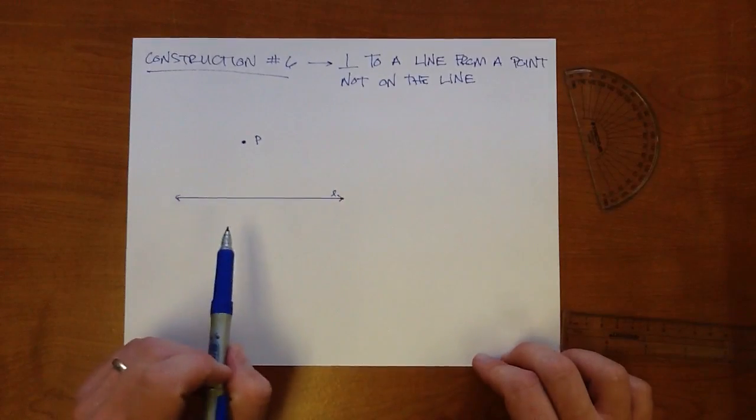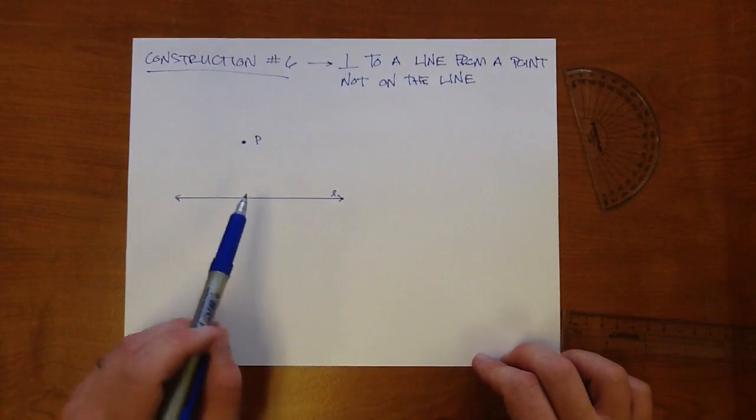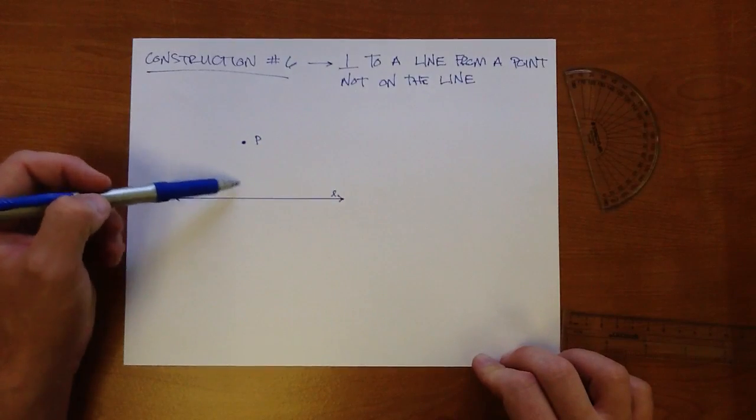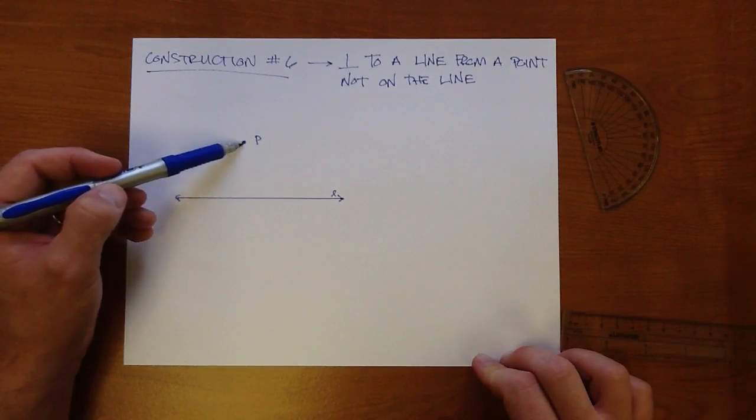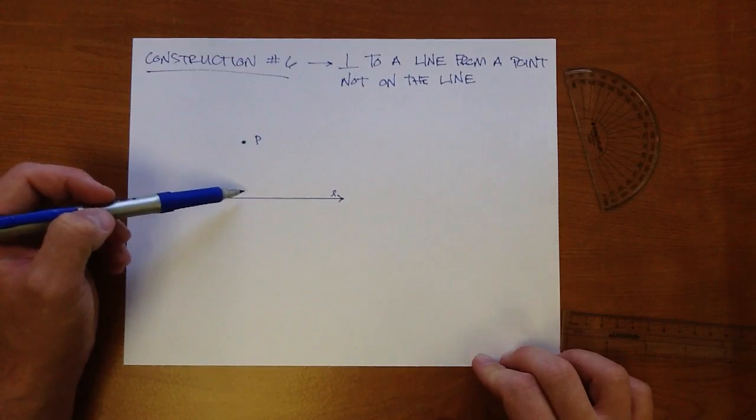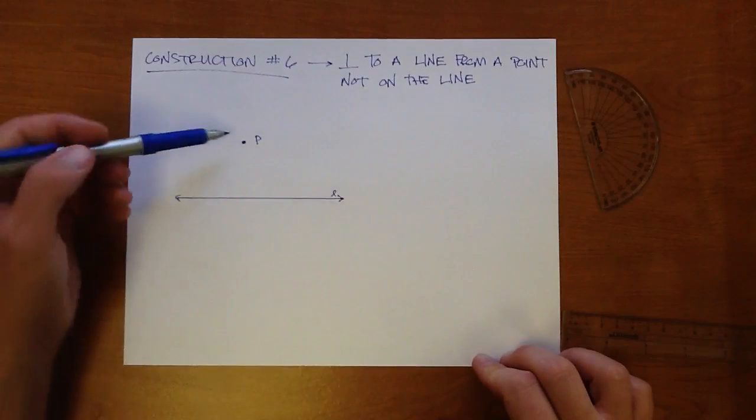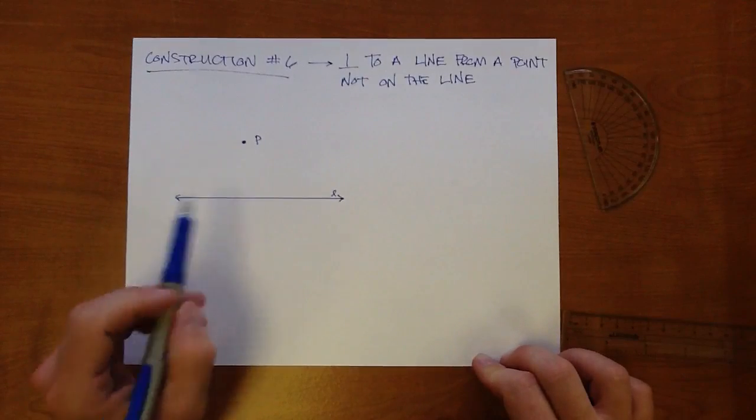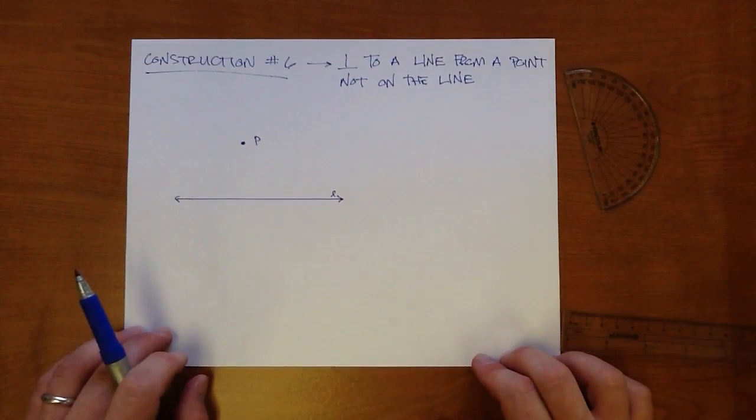Well, you should remember from earlier in your geometry studies that the distance from a point to a line is the length of the perpendicular segment connecting that point to that line. So what that means is if we can find the line that's perpendicular through point P to line L, we can measure the distance to figure out how far is P from L.